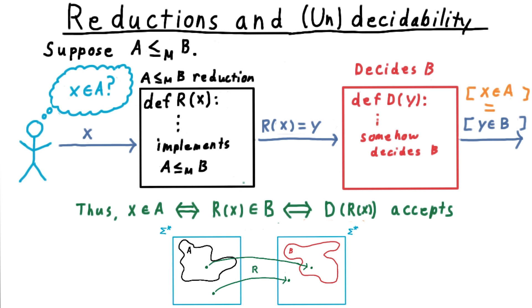If I can figure out whether a string is in B or not, then by the properties of the reduction, this also lets me figure out whether the original string X was in A. That means that we can say that the composition of the reduction and the decider for B is itself a decider for A.